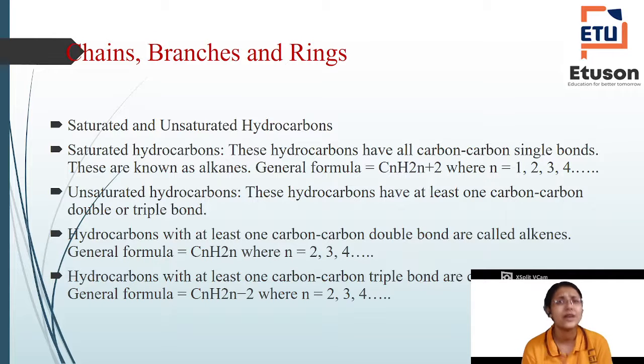What is the formula? The formula for saturated or alkanes or single bond is CnH2n+2, where n stands for 1, 2, 3, 4. So first one will be CH4. If n is 2, you have C2H6. Then you have C3H8. The formula for alkenes is CnH2n. If n is 2, then C2H4. And hydrocarbons with triple bond, alkyne, is CnH2n-2.